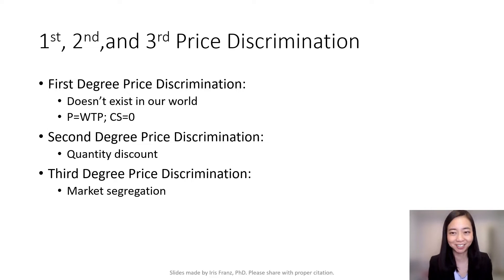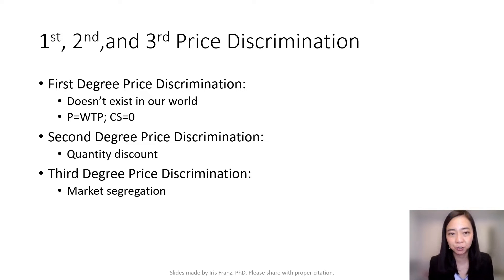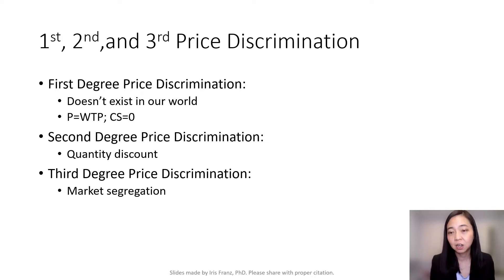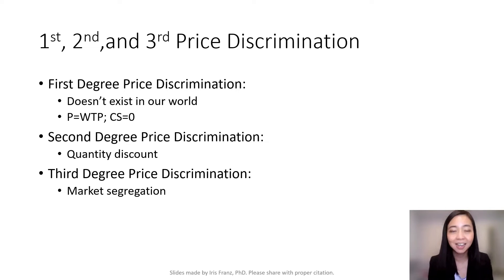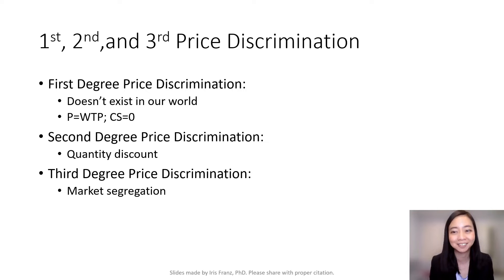The first degree price discrimination actually doesn't exist in the real world — we only introduce that for educational purposes. Imagine a sci-fi movie where there is a seller who can tell your exact willingness to pay, and the seller charges you a price exactly equal to your willingness to pay. Therefore, your consumer surplus is equal to zero.